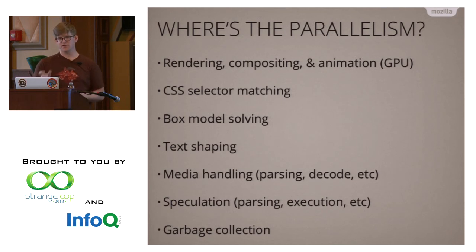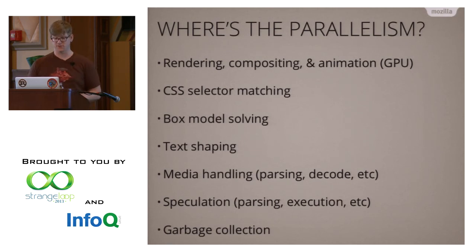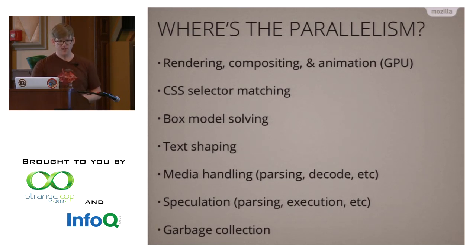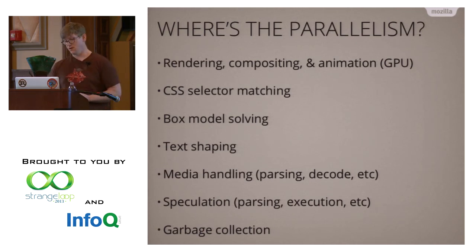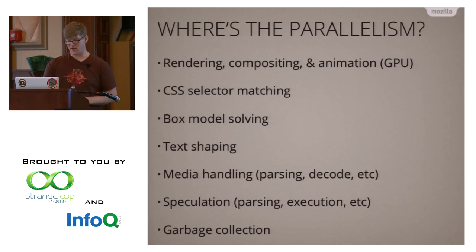Box model solving — that's the parallel layout we already saw. Text shaping is really interesting: when you have a box of text, you have to figure out how big each word is so you can figure out line widths and where to break them. But each word is relatively independent, so you can do the shaping to figure out where they are all independently. That's actually fairly expensive, so it would be really nice to do it in parallel — it should also be embarrassingly parallel. Media handling works similarly. You could parse HTML and CSS in parallel if you can figure out how. Currently, the best we have is that browsers decode images and parse stuff off the main thread.